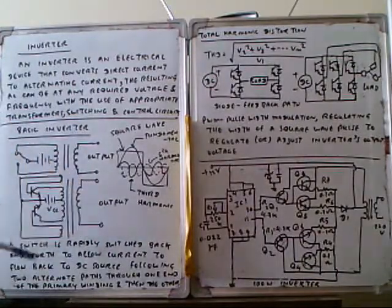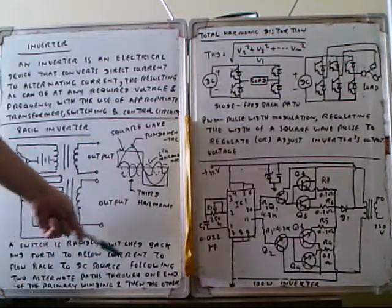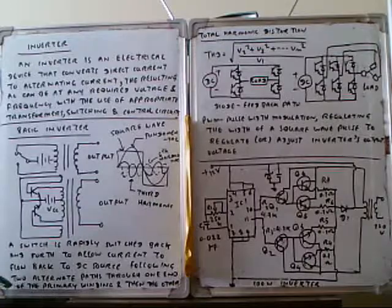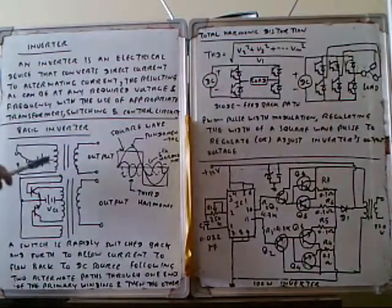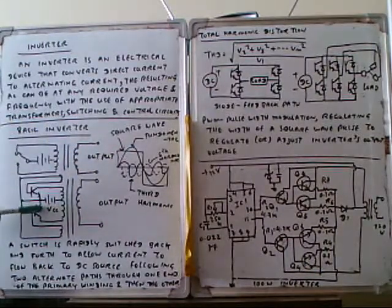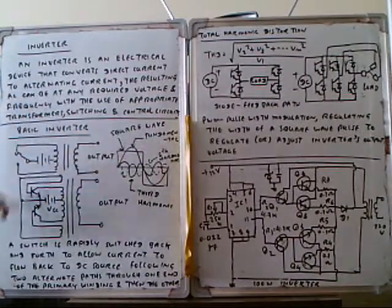If the switch is rapidly switched back and forth to allow current to flow back to DC source, those are the alternate paths through one end of the primary winding and then the other end. This is important for one switching - this is the positive waveform. And switch at this one, so this is the negative waveform. This positive and negative are switching rapidly.